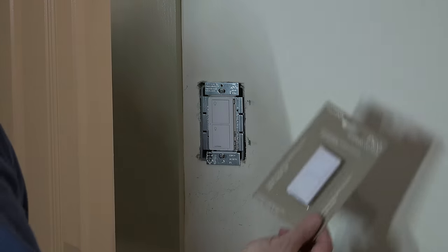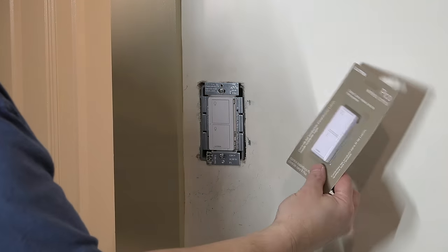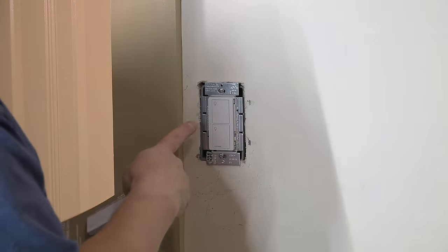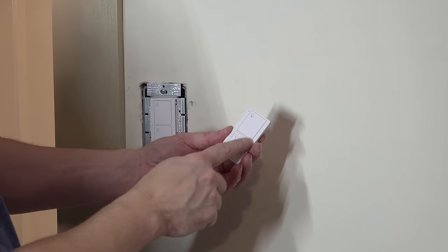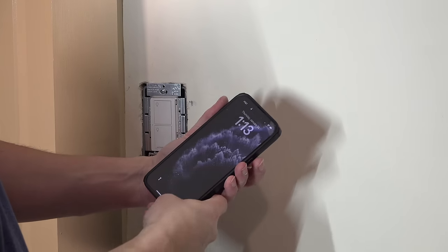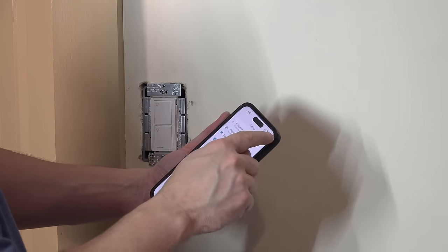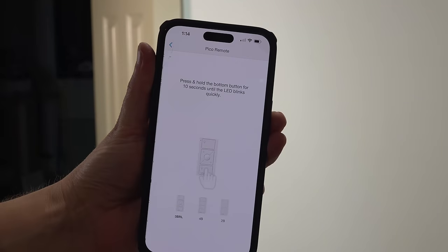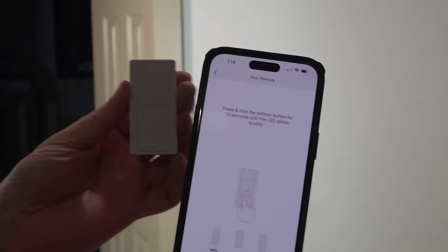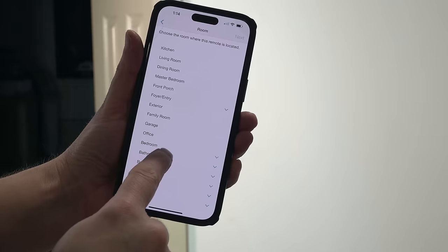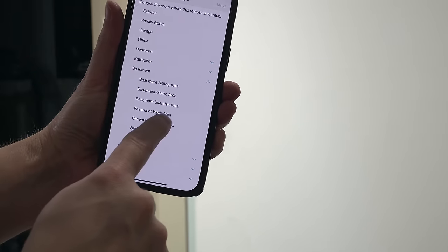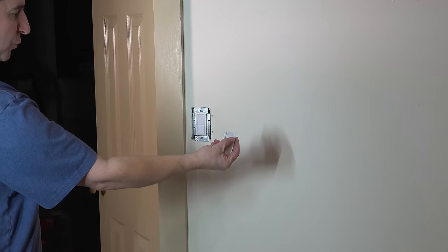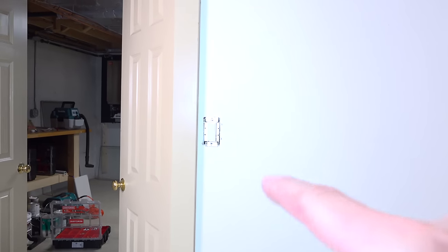But we still haven't gotten to this. This is our remote control that we want to install so that we can now run this switch from another location using just a simple button. It's already got a battery installed. We're just going to go back into our app. I'm going to say add another device. Except this time we're going to say we're adding a Pico remote. Same thing. Press and hold the bottom button. And it already picked it up. Now we've just got to tell it where our remote is located. We're going to control our basement lights. Now we've got our new switch.